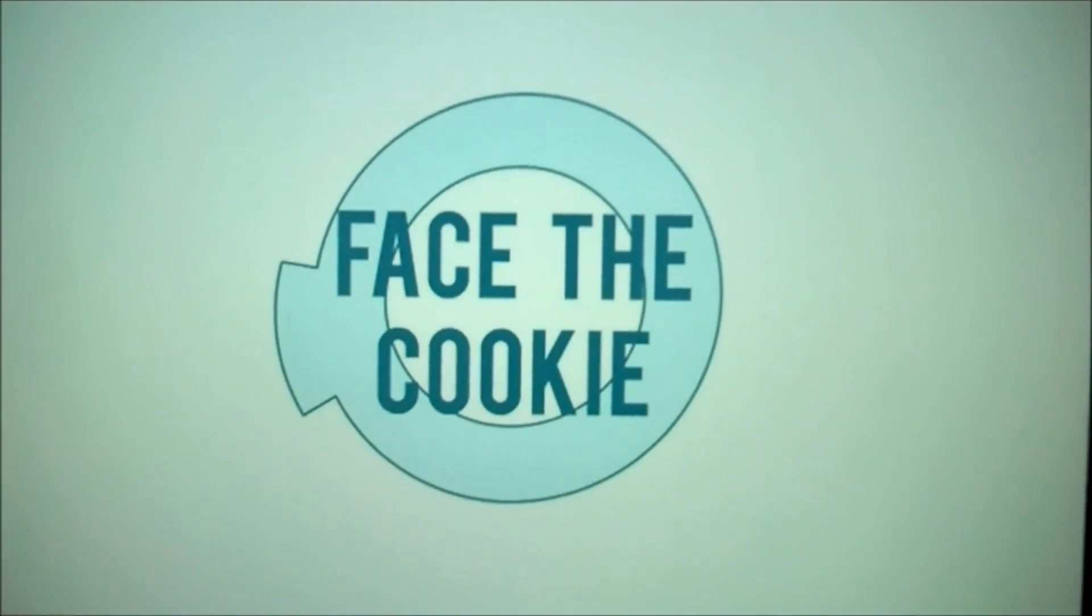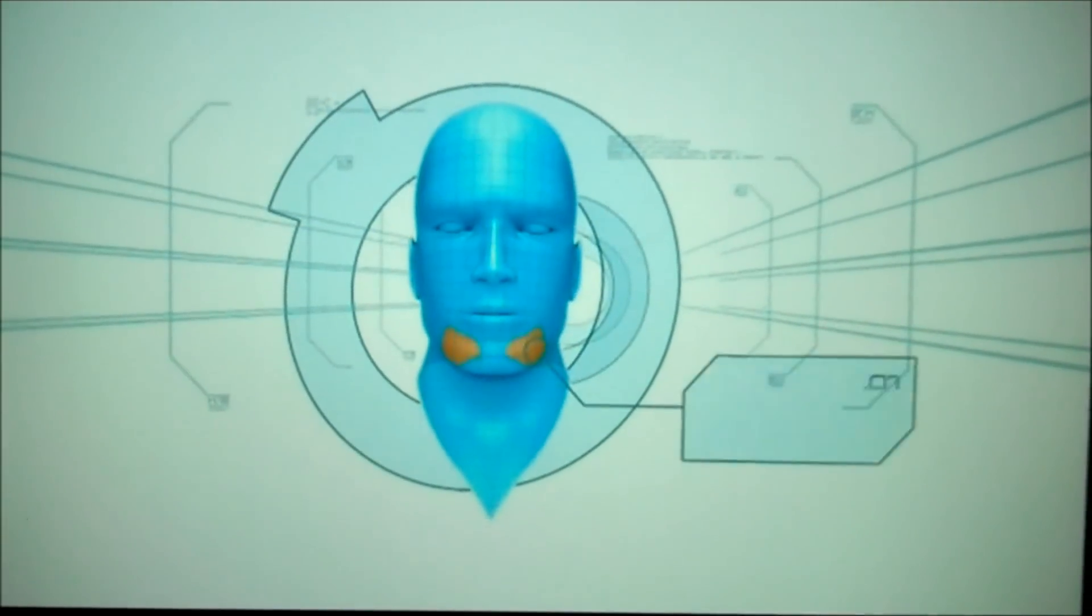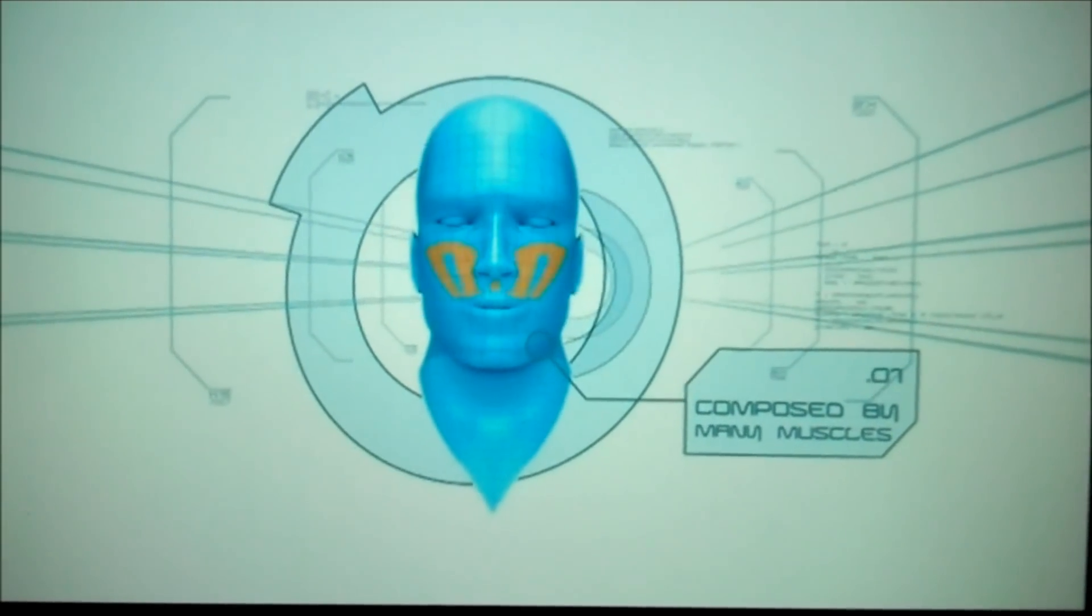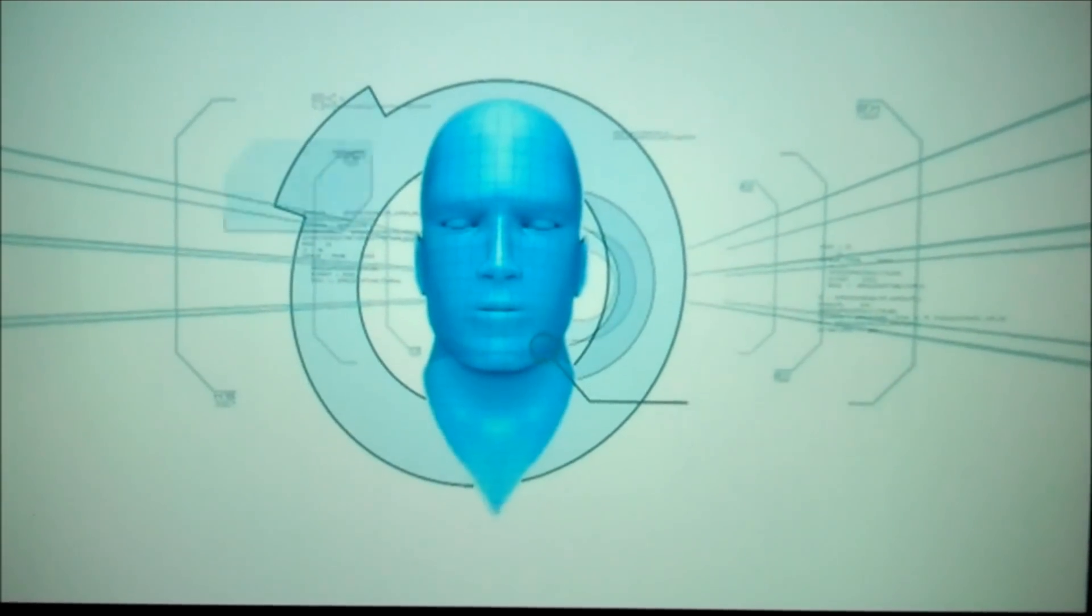Face the Cookie. The human face is composed of many muscles, with two large groups that help make a smile or frown.